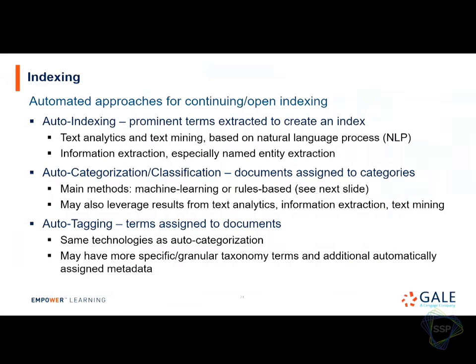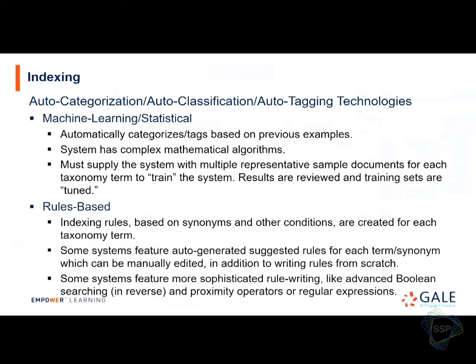These can also leverage a combination of technology — text analytics along with auto-categorization. For machine learning, you feed the system already correctly indexed documents and say 'do it like this,' training algorithms to replicate the pattern. You need a pre-existing set of indexed documents. For rules-based, you don't need a pre-existing set — people write rules for each term specifying synonyms, proximity, and term combinations. It's a bit like doing a Boolean search in reverse, giving instructions that way.